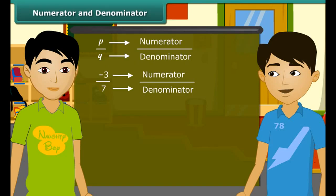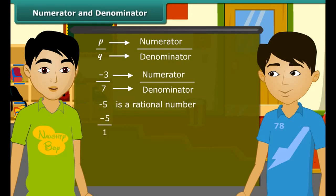Amit, are integers also rational numbers? Yes. For example, the integer minus 5 is a rational number because you can write it as minus 5 by 1. Similarly, the integer 0 is a rational number because 0 can also be written as 0 by 2 or 0 by 7, etc.